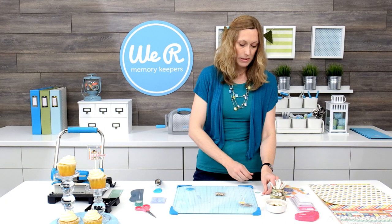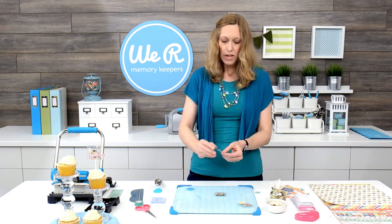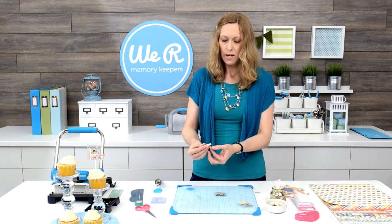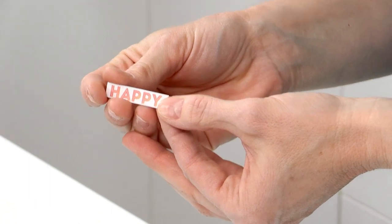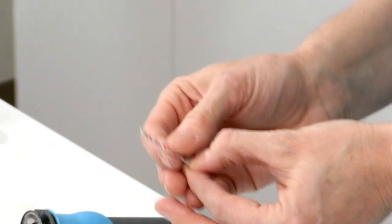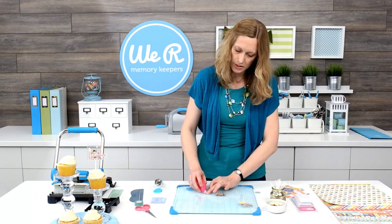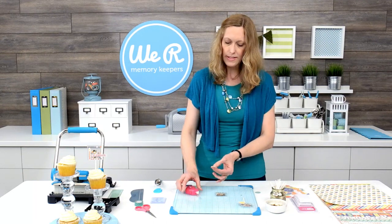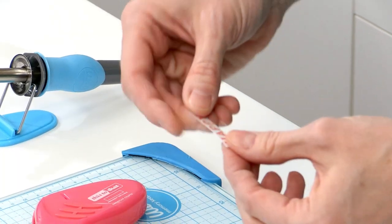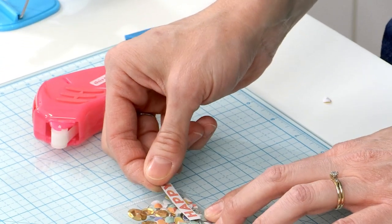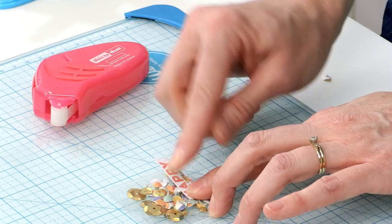Okay, so now we're going to add some embellishments to that. And what I've done is I cut out a little phrase from the pattern paper in the collection, and we're going to add that with a tape roller. And I like to use this for phrases and sentiments because it lays it nice and flat. There's no rippling or bumps in there.